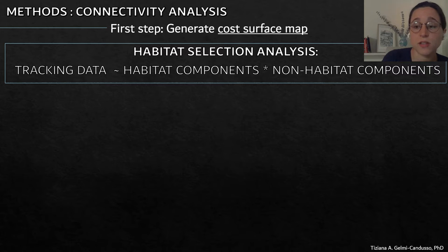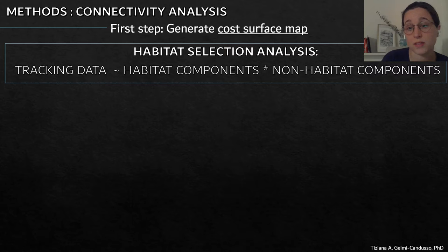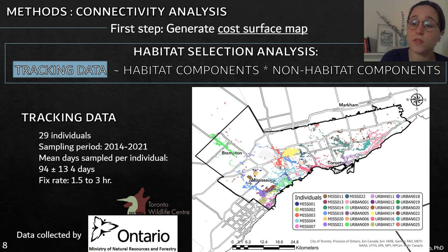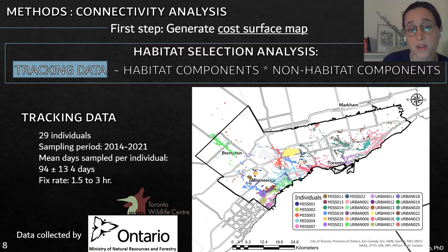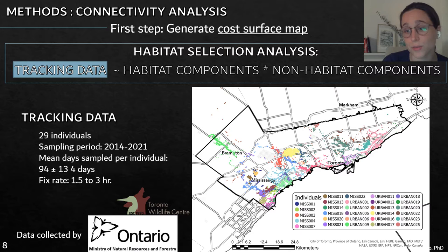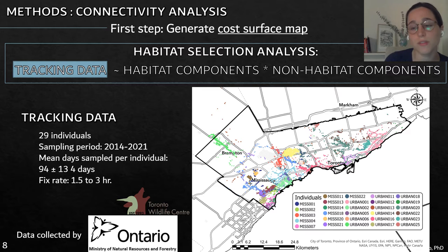We used tracking data to understand how habitat components were selected in interaction with non-habitat components — in our case, temporal and life history traits. The tracking data was collected by the Ontario Ministry of Natural Resources and Forestry in collaboration with the Toronto Wildlife Center. We used 29 animals, and the sampling period was between 2014 and 2021; some are still being tracked. The mean days sampled per individual was 94 plus or minus 134, meaning one to two years per individual. The fix rate between recorded locations was one and a half to three hours.